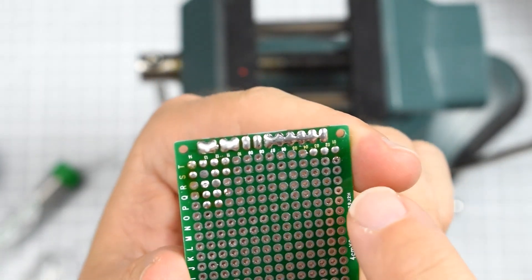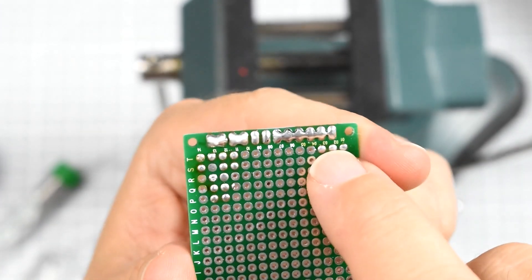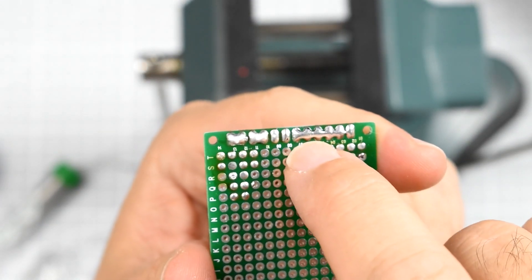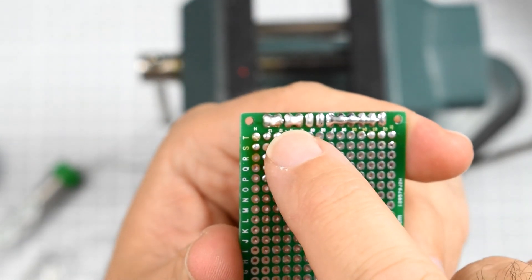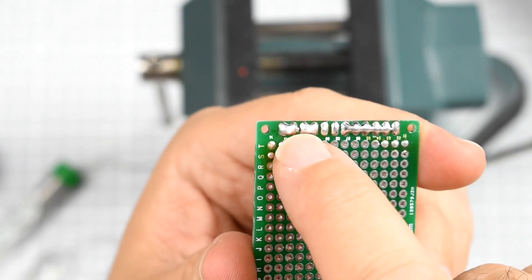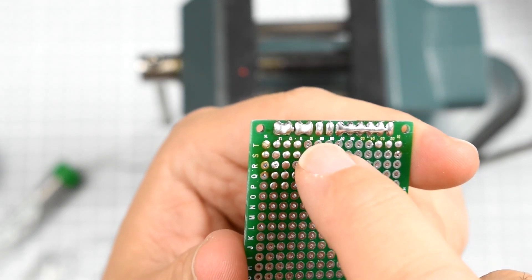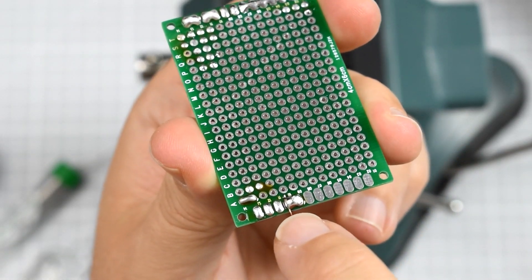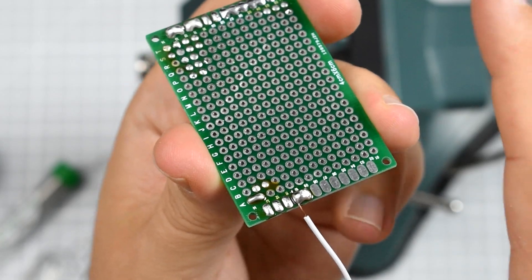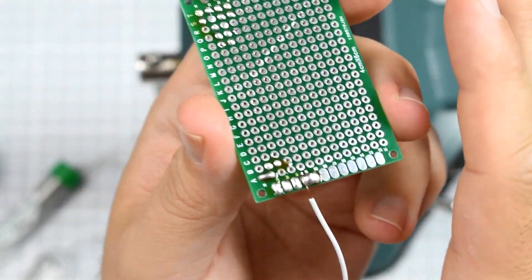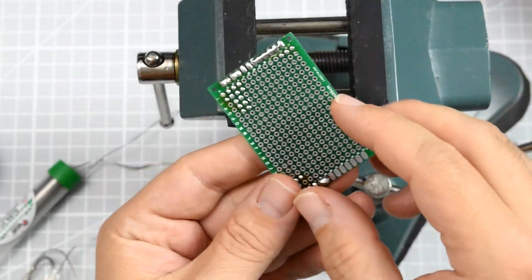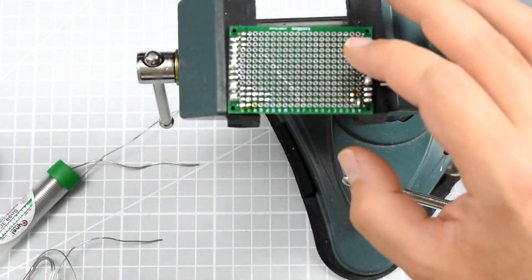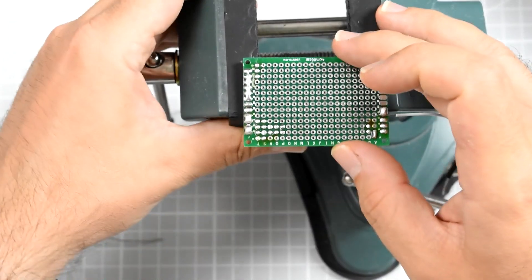Still, the solder with lead looks the best. The joints are smoothest. And the quality of the surface of the leadless joint, either with copper or with silver, it's not really the best. It really lacks some of the qualities of the good old, not so environmentally friendly, leaded solder.